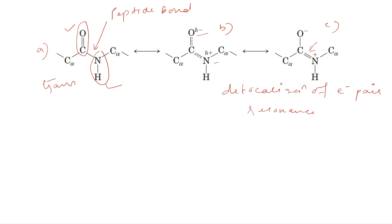As we studied in the covalent bond topic, single bonds have a longer bond length compared to double bonds, because single bonds involve s orbitals while double bonds involve s and p orbitals. In structure A, the C–N peptide bond is a single bond, while in figure C it is a double bond. So the C–N bond length in a peptide bond is less compared to a normal C–N single bond.